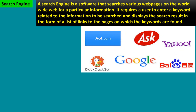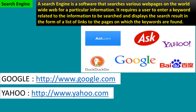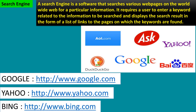The URL of any website is entered in the address bar of a web browser. Search engine: a search engine is a software that searches various web pages on the World Wide Web for particular information. It requires a user to enter a keyword related to the information to be searched, and displays the search results in the form of a list of links to the pages on which the keywords are found.